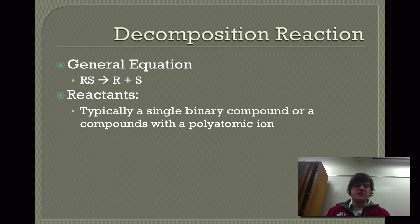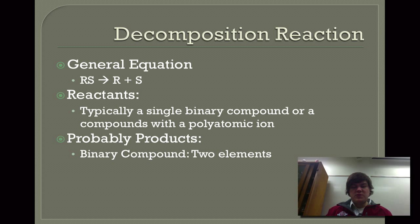When it starts to get hard is when there are compounds with polyatomic ions in them. So probable products are binary compounds, two elements. So if it's a binary compound, it should typically decompose into two elements. I showed you an exception to that rule just a moment ago with the hydrogen peroxide. But usually we'll predict that a reaction will form the two elements in the binary compound.